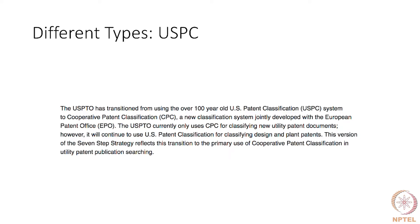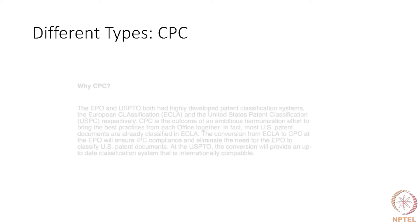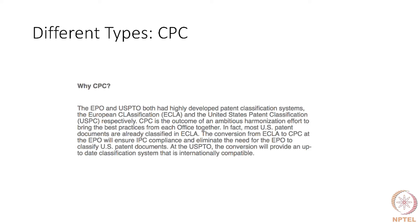The CPC is the classification system jointly developed and run by the USPTO and the EPO. This is an outcome of an ambitious harmonization effort to bring the best practices of each office together. Today, the US patent office and the EPO both follow the CPC system.